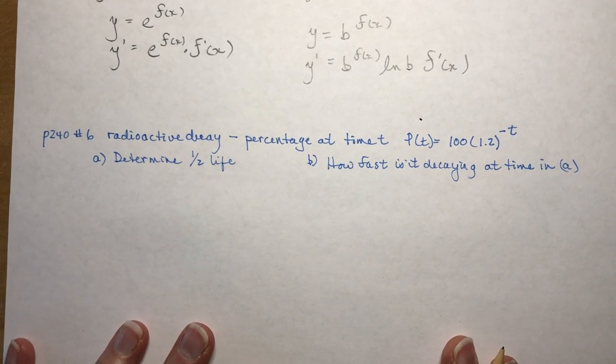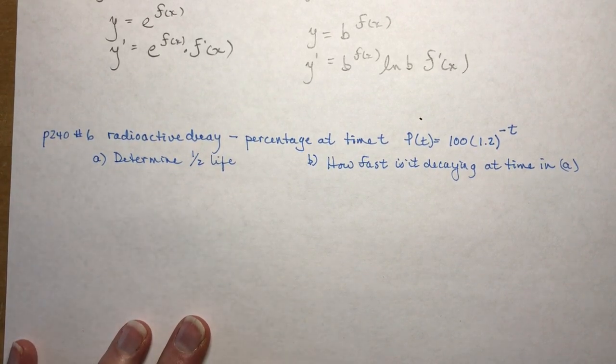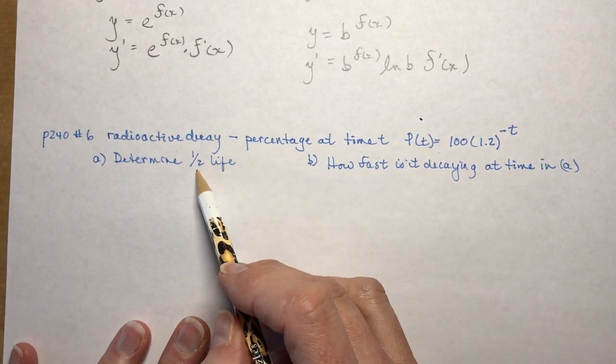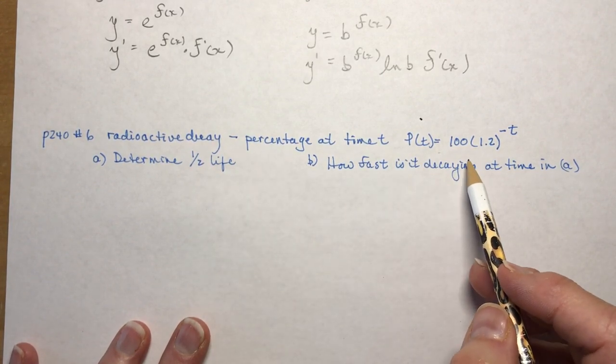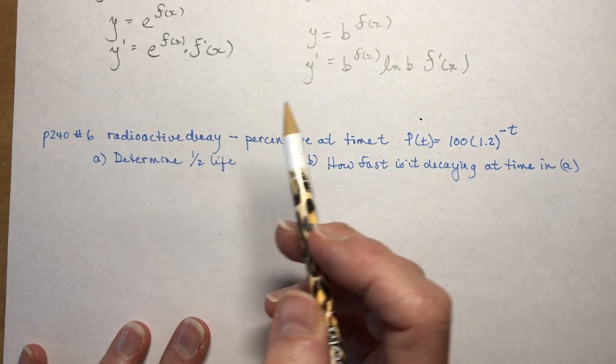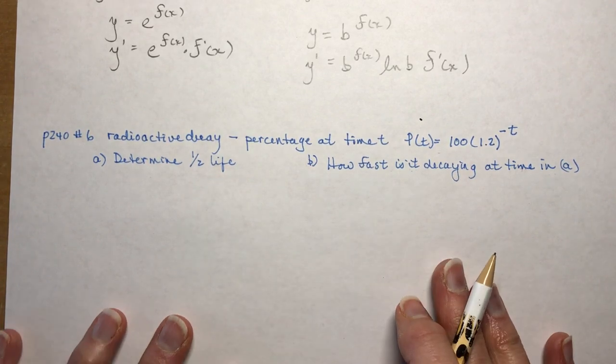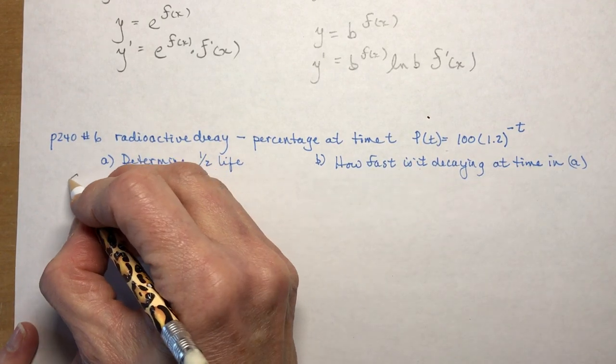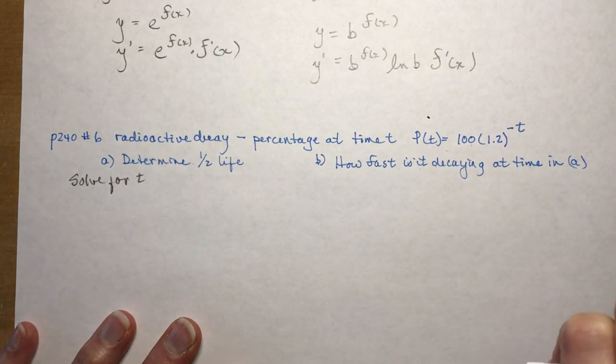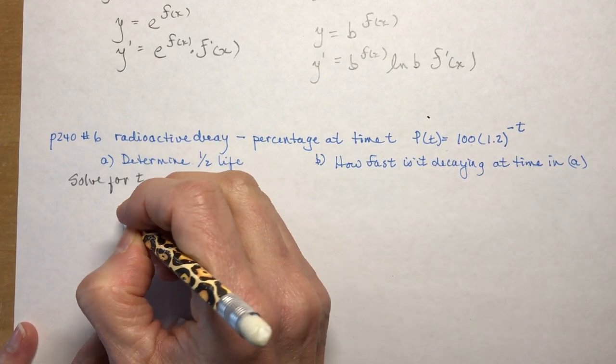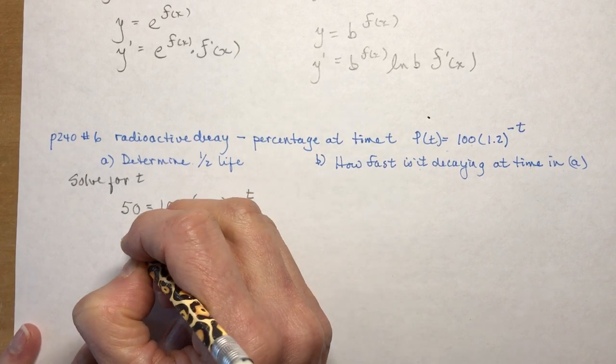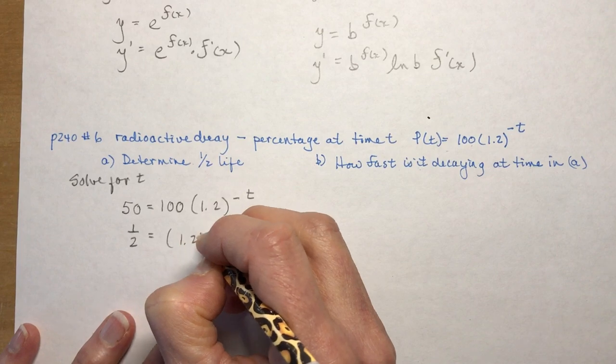The last thing I want to do is a word problem from your textbook. It's number 6 on page 240, and it asks you, determine the half-life. So it's a radioactive decay question. Percentage left at time t is given by this equation. Determine the half-life, and how fast is it decaying when it's at its half-life? In other words, they want to know the rate of change, how fast something is decaying. That's your derivative. Determining a half-life, that's logarithms. That's going back to advanced functions. So determine the half-life. We're solving for t. So if you want to know the half-life, you say, okay, well, when do we have 50%? If this is 100, when is it at 50? So you can start it like this. You could just even set it equal to a half.